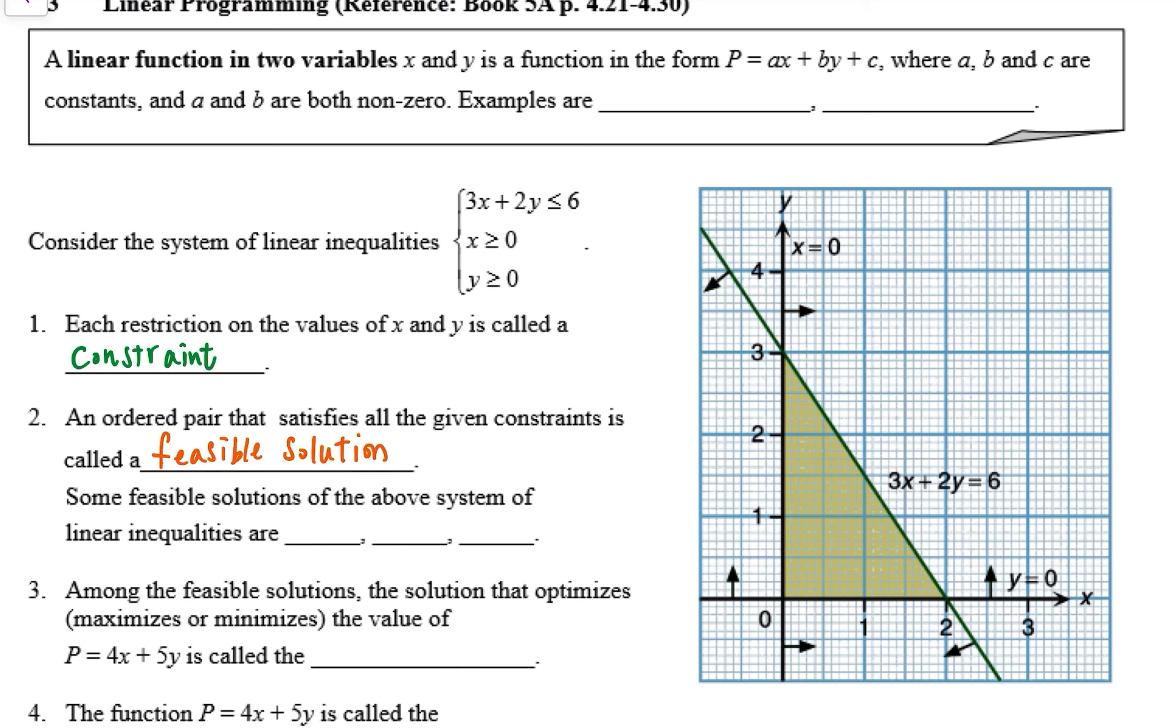So sometimes we'll be shading the feasible solutions. Referring to this example, some feasible solutions of the above system of linear inequalities are on the boundaries: (0, 0) and also (1, 1), (2, 0).